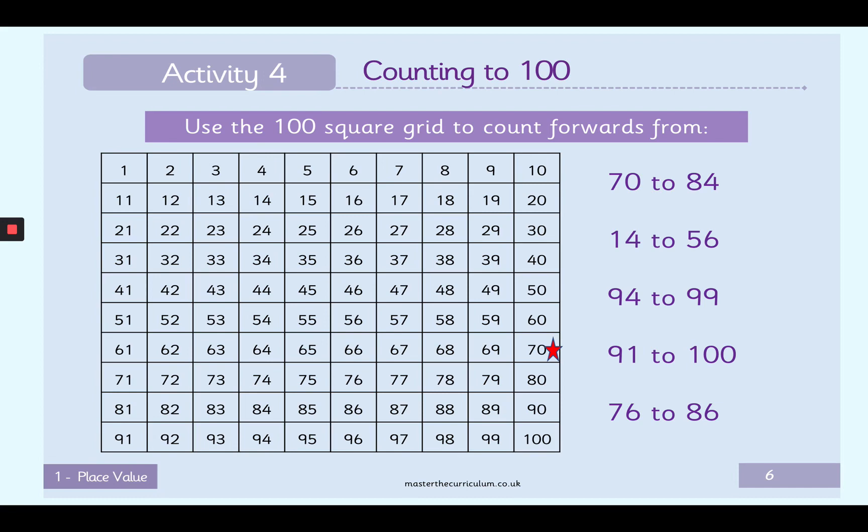Oh, there it is. Well done. There's 70. And now can you find the number 84? Well done. There's the number 84. So let's count together from 70 to 84.